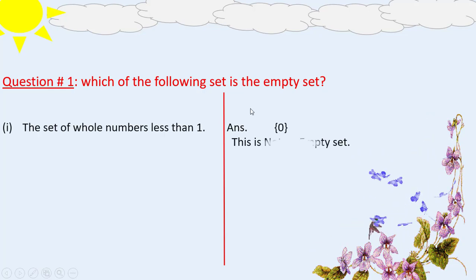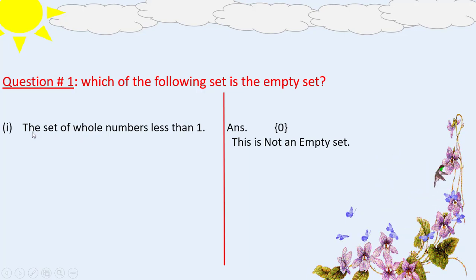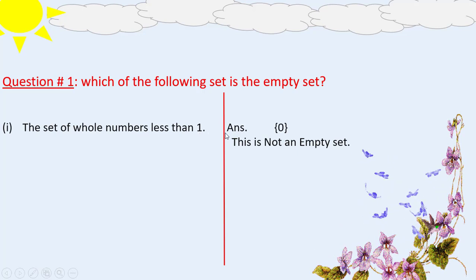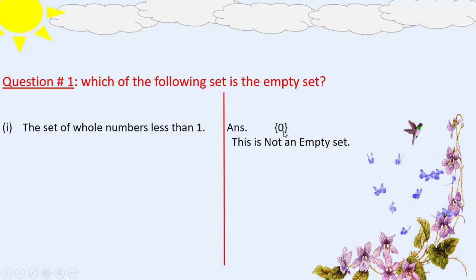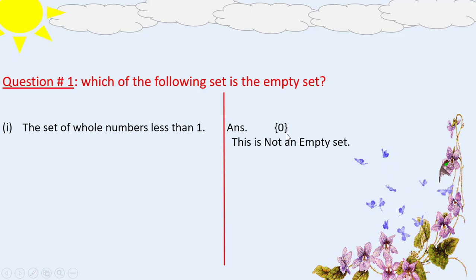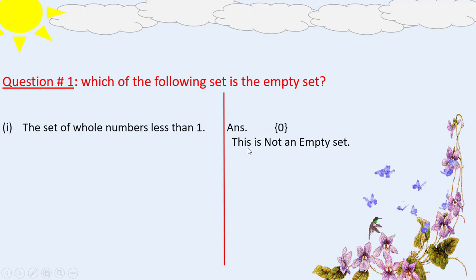The first part of question number 1 is the set of whole numbers less than 1. As you know, the set of whole numbers starts from 0. In the set of whole numbers less than 1, we have the element 0, so this is not an empty set.